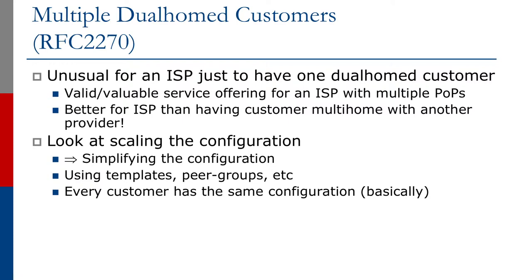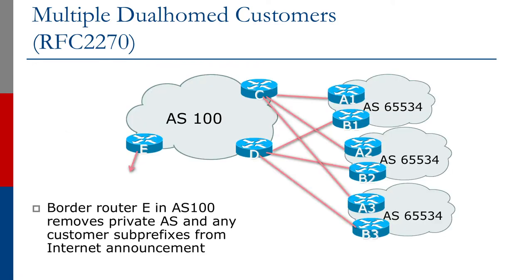You want every customer to have the same configuration more or less. So let's look at the diagram. Now we have AS100 with links to, in this case, three customers. The first thing you'll notice is that each customer is living in the same autonomous system — we've chosen AS65534 for each of the customer ASes. Router E in the diagram is AS100's upstream, and that again removes the private ASes we're using and any customer sub-prefixes from the internet announcement.